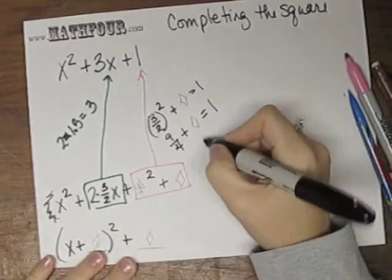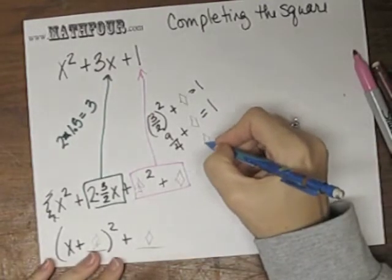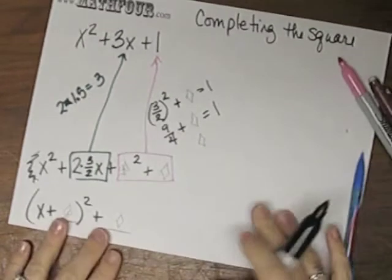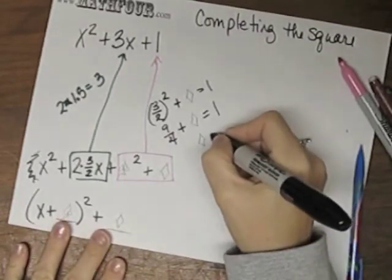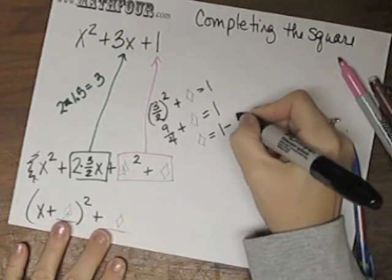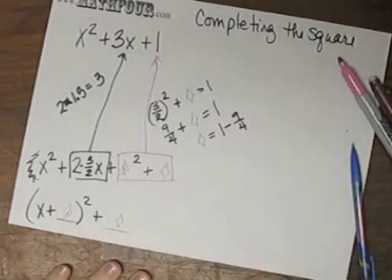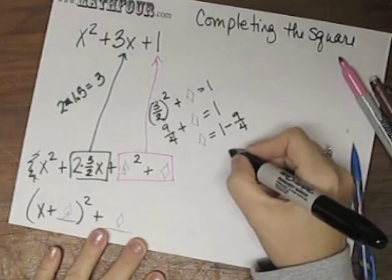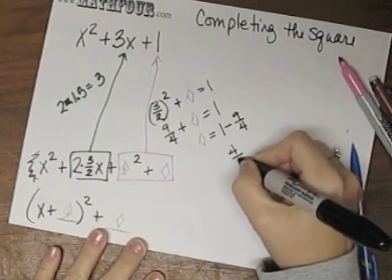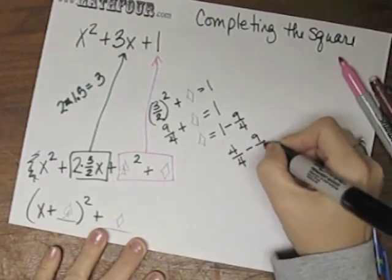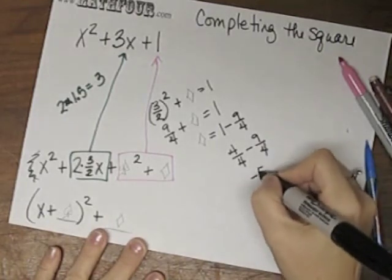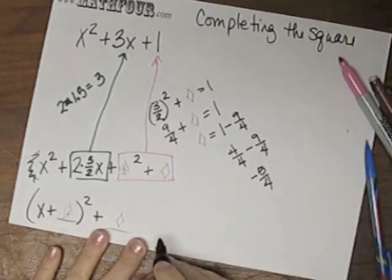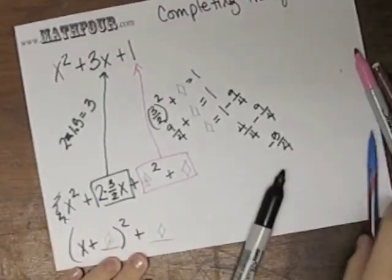Fractions. So our diamond is 1 minus 9 fourths. So I need a common denominator. 4 fourths. Luckily, 1 is good with that. 4 fourths minus 9 fourths. So that's negative 5 fourths. So that's what our diamond is.